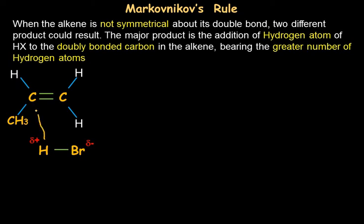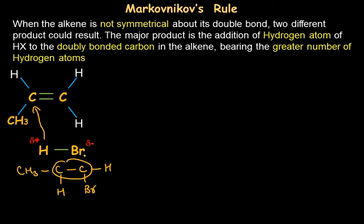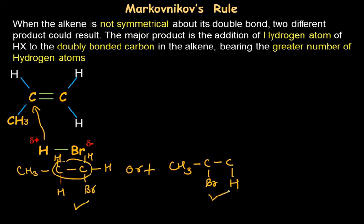There are two possible products: hydrogen can go to the second carbon, giving CH₃CH(Br)— where the double bond breaks and hydrogen bonds to one carbon and bromine to the other. The second possibility is that bromine goes to the second carbon and hydrogen goes to the first carbon. Both products will form during the reaction, but we need to find which is the major product according to Markovnikov's rule.